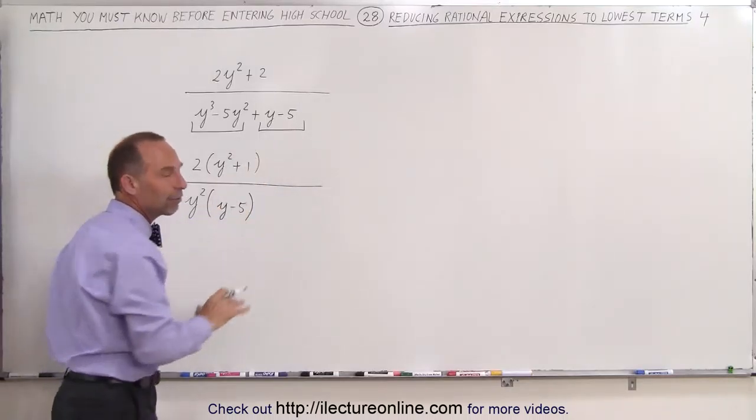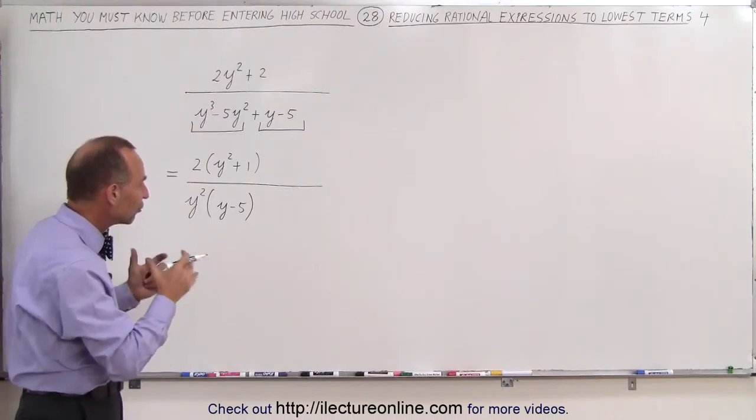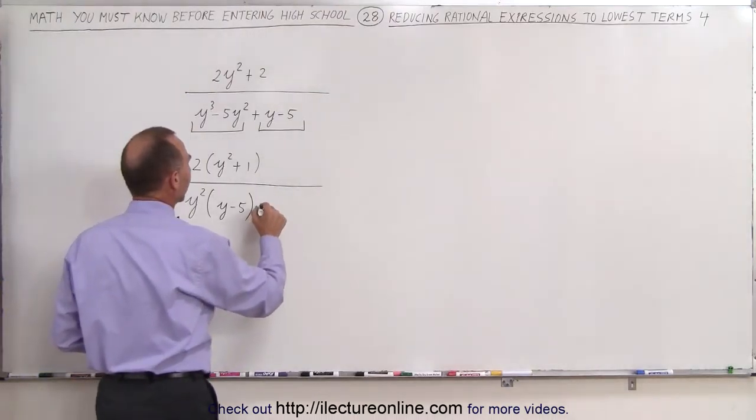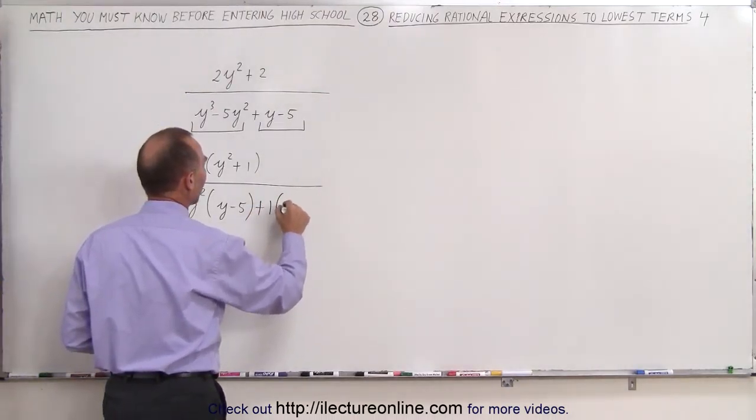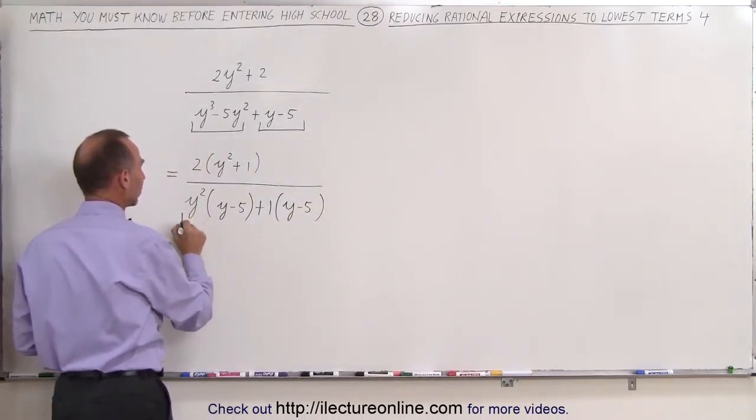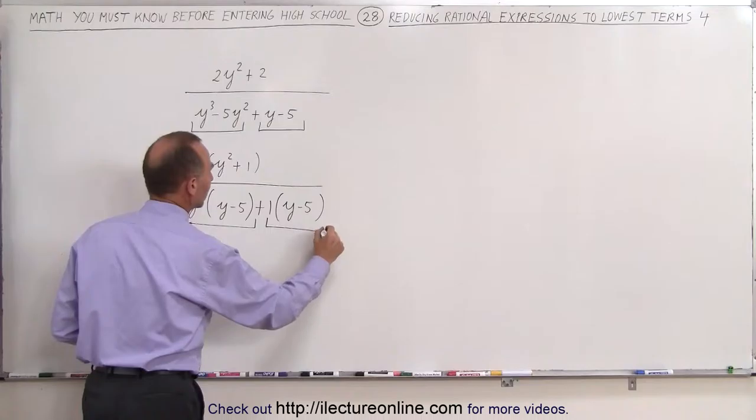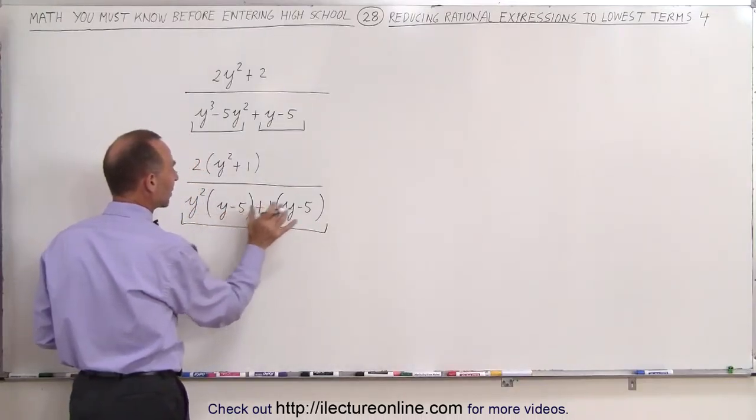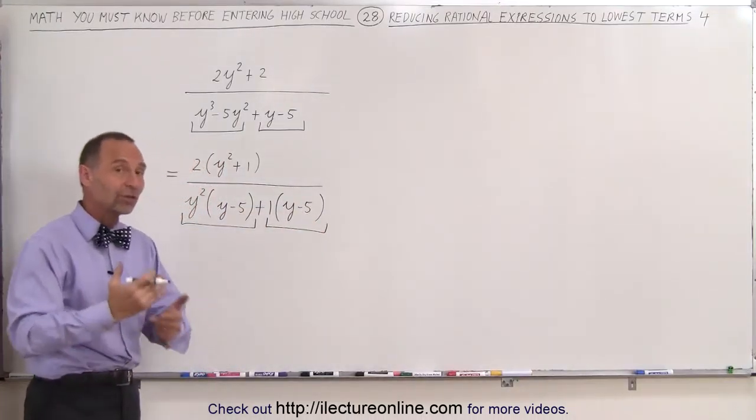Here, I can't factor out anything, but just to make it easier to see what we're doing, we're going to write it as plus 1 times y minus 5. Because when we do that, we can see that there's a common factor. We have y minus 5 here, we have y minus 5 there, which can be factored out.